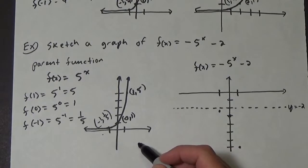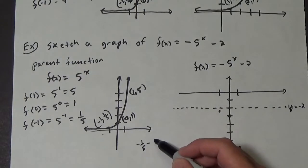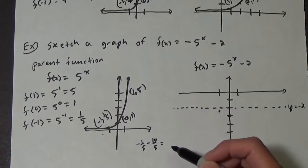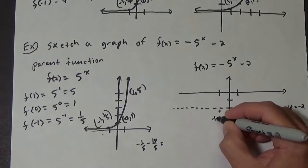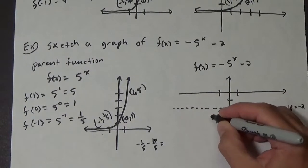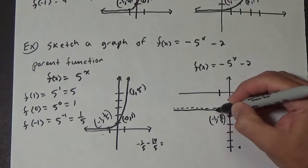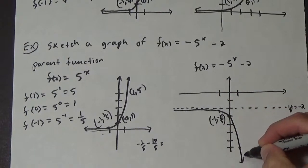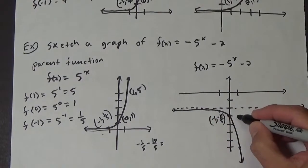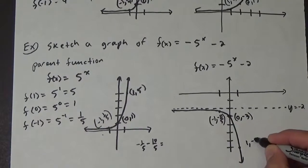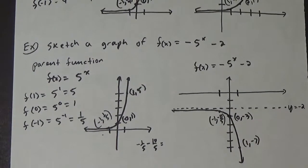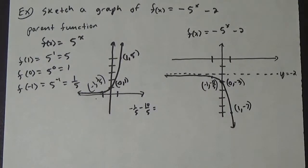Now how you label that last point depends on where you are. We have negative 1 fifth minus 2, which is negative 1 fifth minus 10 fifths, so that is negative 11 fifths. So the point is negative 1 and negative 11 fifths. Our labeled points are: 0 and negative 3, and 1 and negative 7. And that is a very good graph of this exponential function.